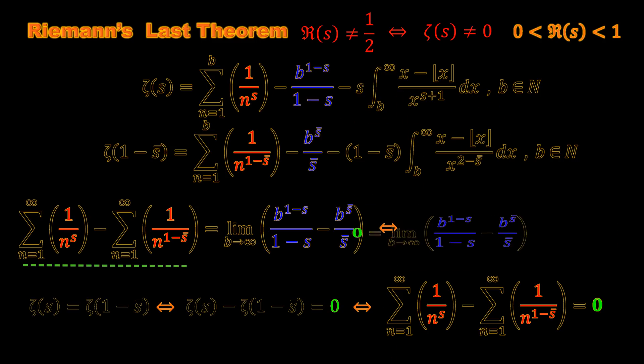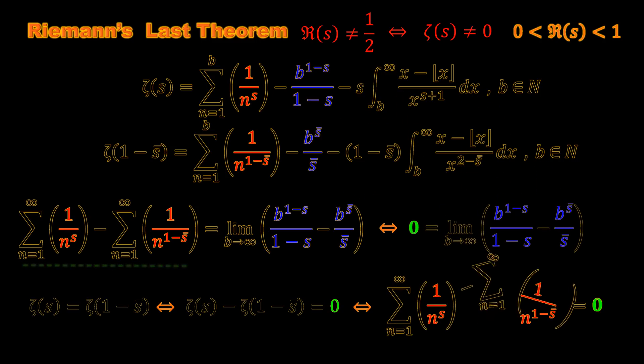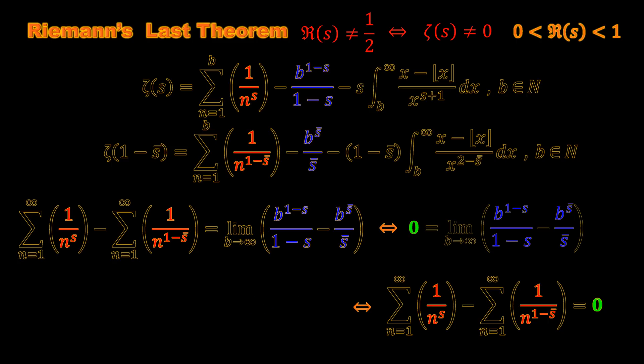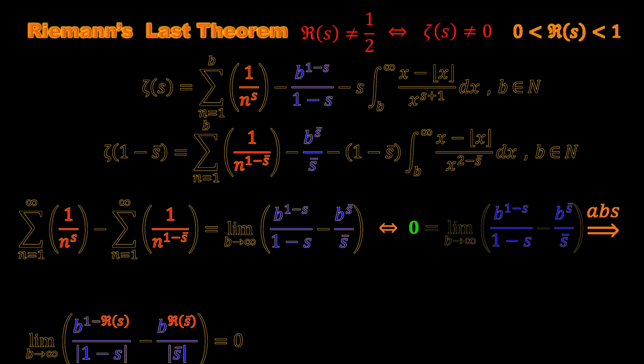Therefore we can say that the left-hand side is zero. Let's clean up a little bit. We can take absolute of the last function and we get this.